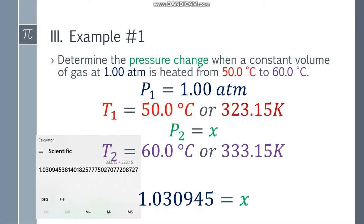Cross multiply, and that will be 333.15 equals 323.15x. Divide both sides by 323.15 to get the value of x. And x equals 1.030945 and so on.